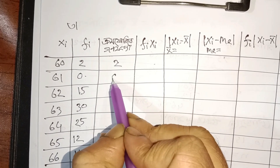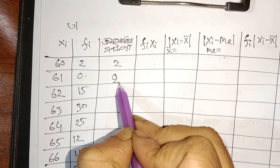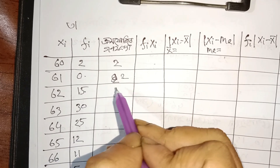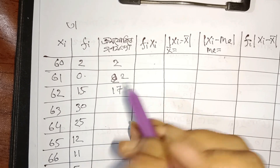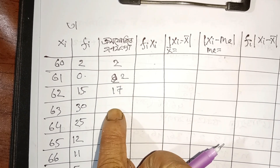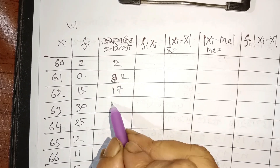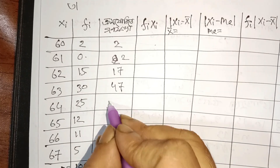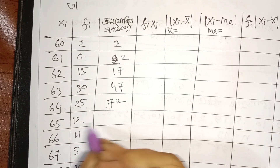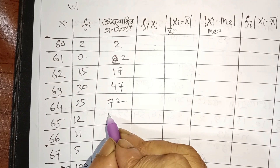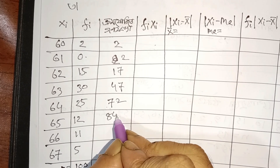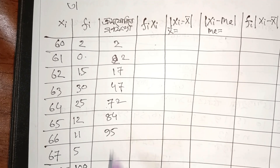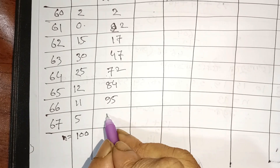Welcome. 2 give 2 and 2 give 2, and they give 2 and 2 give 3. 3 give 3, 4 give 3 and 4 give 3, and 4 give 3, and 2 give 4, which is equal to 2. 12 and 12 is equal to 84. 84 and 11 is equal to 95.